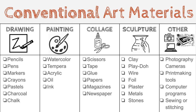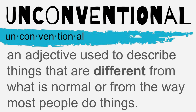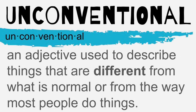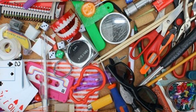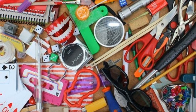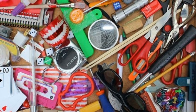What are some other conventional art materials you can think of? Unconventional is an adjective used to describe things that are different from what is normal or from the way most people do things. Items you might find in a junk drawer could be considered unconventional.